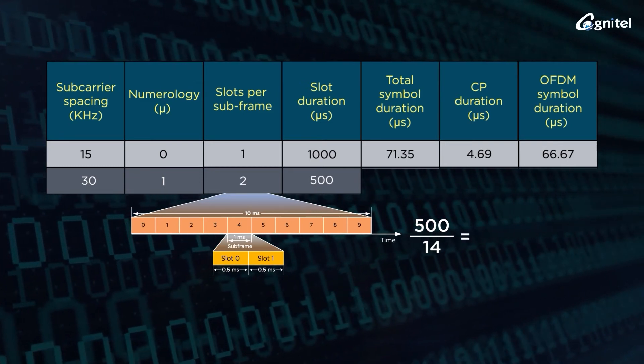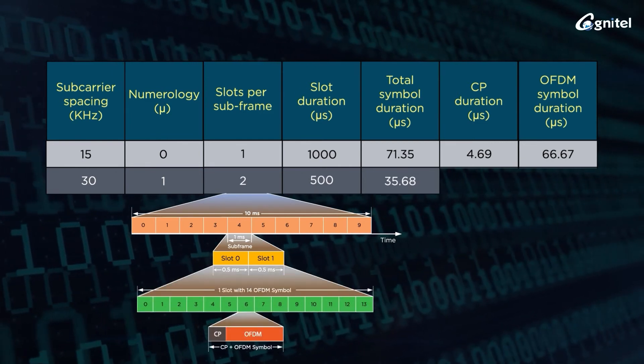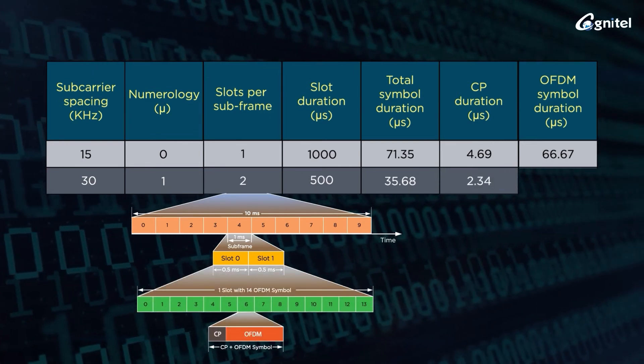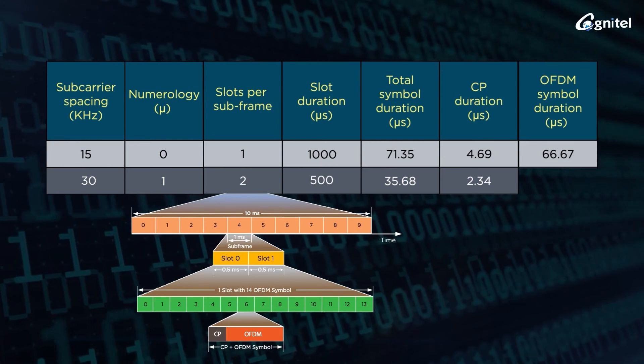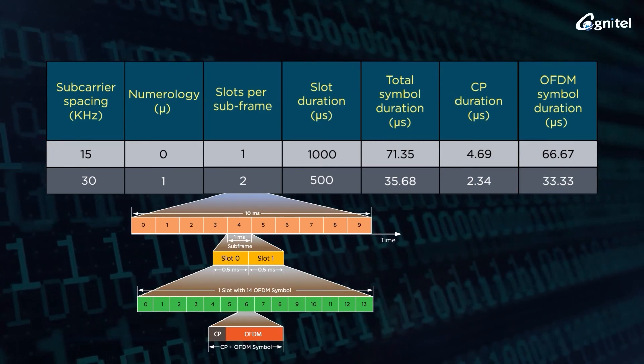The cyclic prefix duration is 2.34 microseconds and OFDM symbol duration is 33.33 microseconds.